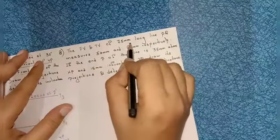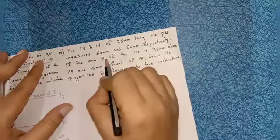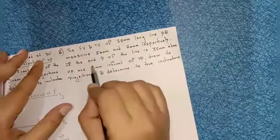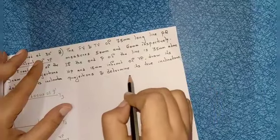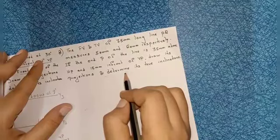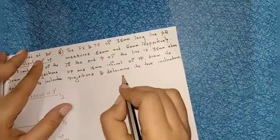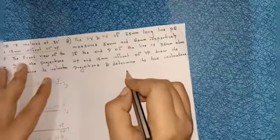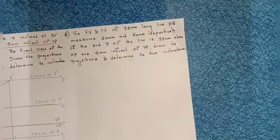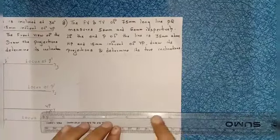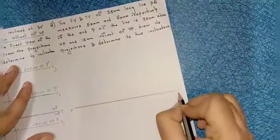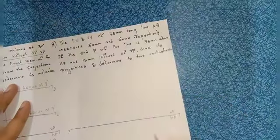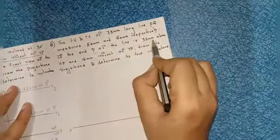Problem eight: the front view and top view of a 75mm long line PQ measure 50mm and 60mm respectively. End P of the line is 35mm above HP and 15mm in front of VP. Draw its projections and determine its true inclinations. In this question they mention distances as well as front view and top view distances. First draw the reference line of any length and name it as XY — vertical plane and horizontal plane.